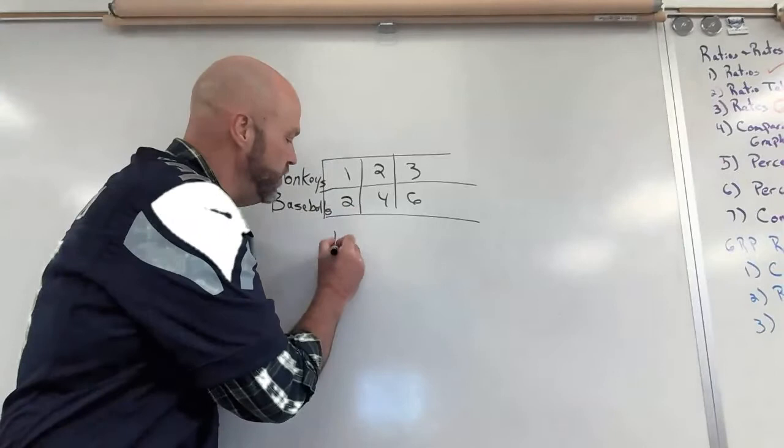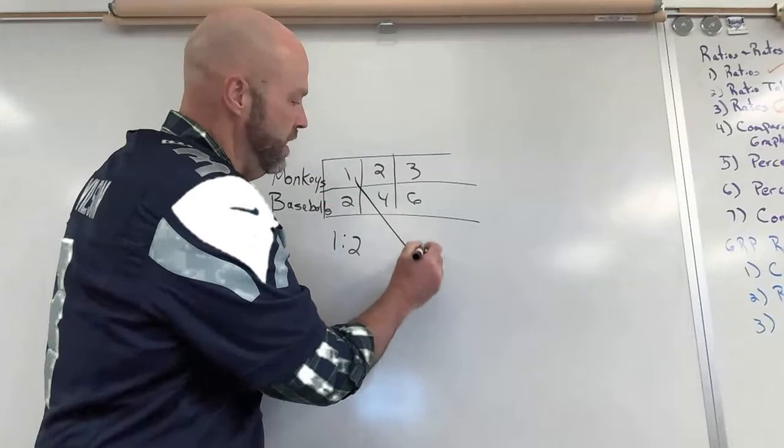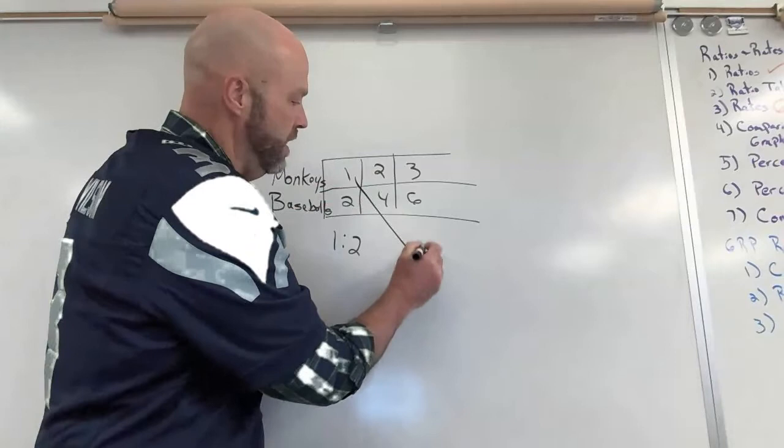It's not one out of two. There's a ratio of one to two monkeys to baseballs. But how many objects are there? One, two, three. There's really three. So the fraction there is one out of three because there's one monkey and two baseballs.